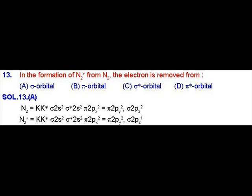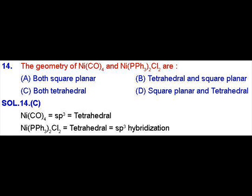Question number 13: if we remove one electron from N2, then N2+ is formed. From where is this electron removed? The electron is removed from the highest occupied molecular orbital (HOMO), which in this case is sigma 2pz.